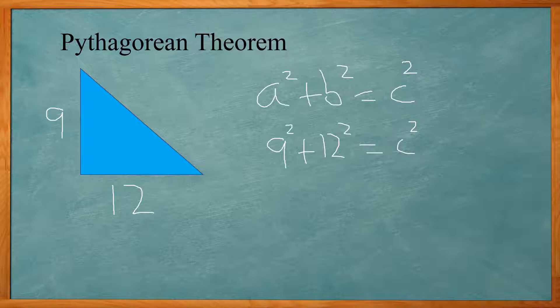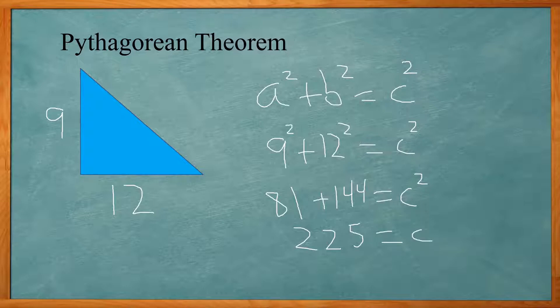9 squared, 9 times 9 is 81. 12 times 12 is 144. 81 plus 144 is 225, so 225 equals c squared. Now we have to take the square root of both sides. The square root of c squared is just c, and the square root of 225 is 15.